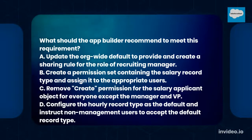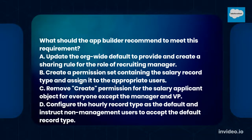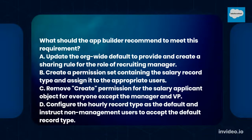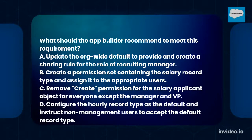A. Update the org-wide default to private and create a sharing rule for the role of recruiting manager. B. Create a permission set containing the salary record type and assign it to the appropriate users. C. Remove create permission for the salary applicant object for everyone except the manager and VP. D. Configure the hourly record type as the default and instruct non-management users to accept the default record type.